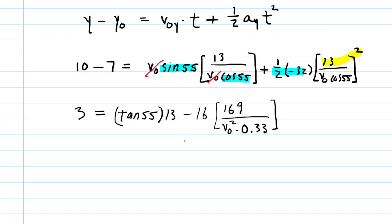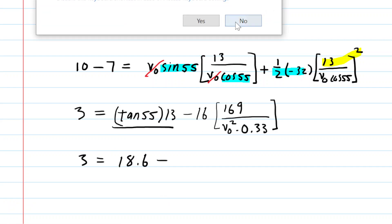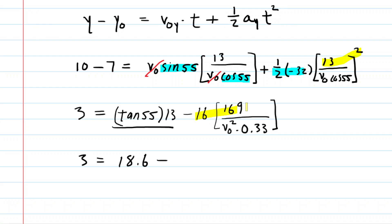Okay. Now, we can next multiply 13 and tan 55. And when you do that, you get 18.6, approximately. Now, over here, perhaps we could multiply 16 by 169, which is 2704. So now we have 2704 all over, and then we can maybe just write this as 0.33 v-naught squared. We're getting closer and closer.